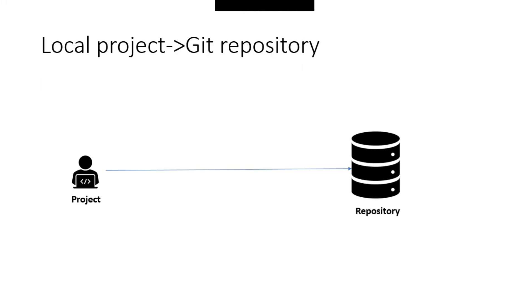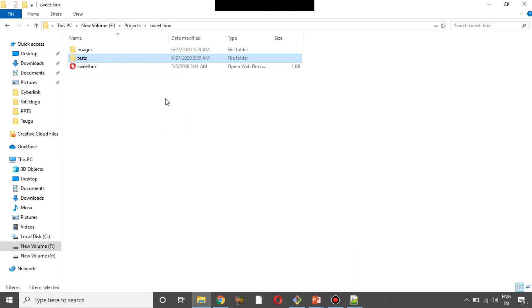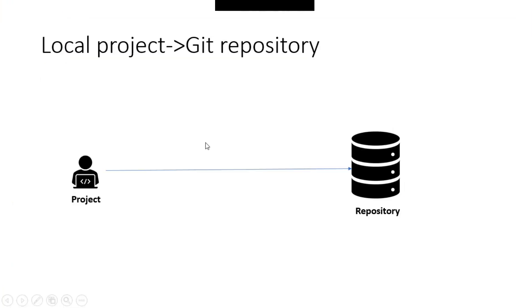So we will discuss this in one tutorial. Now we will push a local project to a Git repository. First, we need a GitLab or GitHub account and create a repository. Second, we will develop a local project.